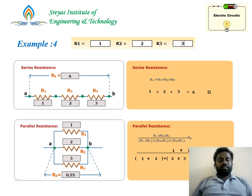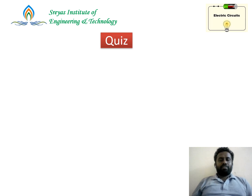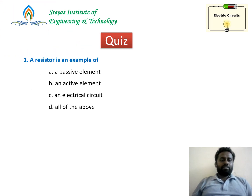Now let's have some quiz questions. I just want to know whether you have understood what we have covered. Take a pen and piece of paper, write the question numbers, and write your answers. I'll give you the key at the end. First question: a resistor is an example of — is it a passive element, active element, electrical circuit, or all of the above?